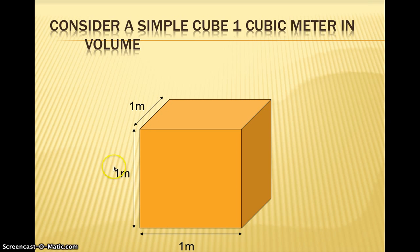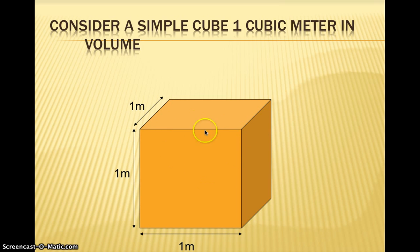That's right — there are 100 centimeters in one meter. So the cube is 100 centimeters tall, 100 wide, 100 deep. My question for you is: how many cubic centimeters exist within this cube? How many little cubes with a centimeter on each side could I fit inside here and stack up to equal this cube?